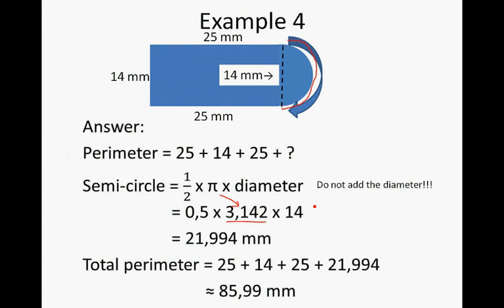Now to get the perimeter, we do not add the diameter like when we did the perimeter of a semicircle, because this doesn't contribute towards the perimeter of the whole shape. So we will only add 25, 14, 25, and 21.994. And rounded, that is equal to 85.99 mm.